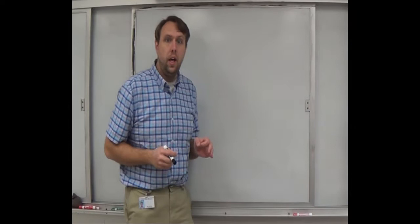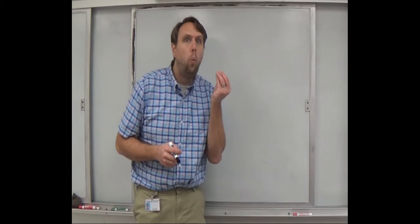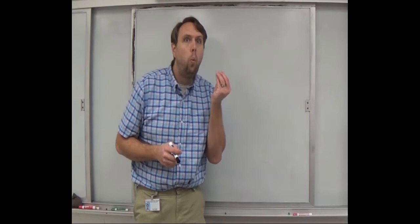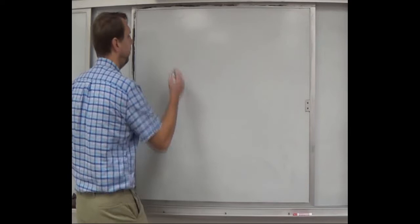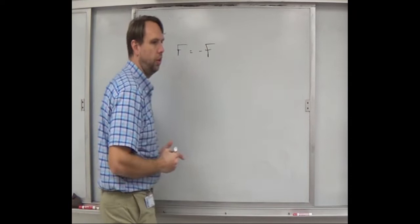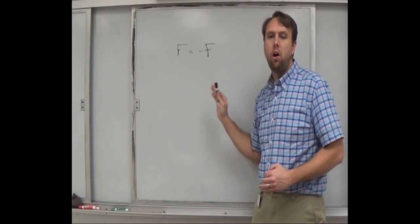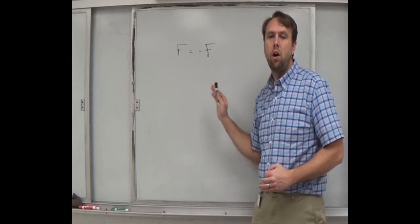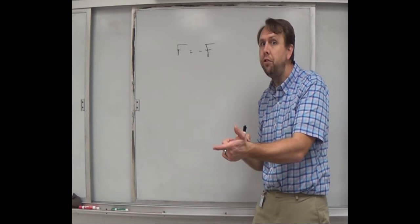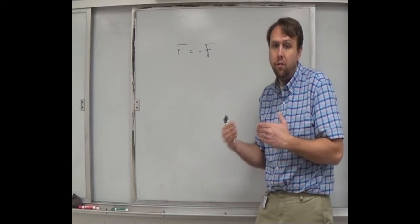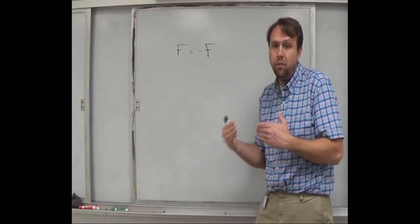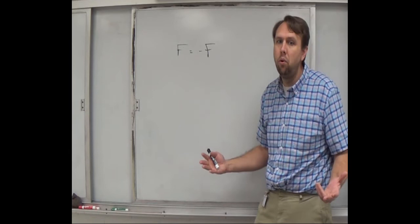Newton's third law is a little different — the first two laws apply to one object and one free body diagram. With Newton's third law, you're comparing two different objects and two different free body diagrams. It says the force on one object is equal and opposite to the force on the other object. So if you punch a wall, your hand puts a force on the wall, but the wall also puts a force back on your hand — equal in magnitude, opposite in direction. You can't hit a wall any harder than the wall hits you back.